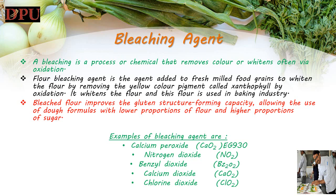Bleaching agents: bleaching is a process or chemical that removes color or whitens, often via oxidation. Flour bleaching agent is an agent added to fresh milled food grains to whiten the flour by removing the yellow color pigment called xanthophyll, via oxidation. It whitens the flour and this flour is used in the baking industry. Bleached flour improves the gluten structure-forming capacity, allowing the use of dough formulas with lower proportions of flour and higher proportions of sugar.